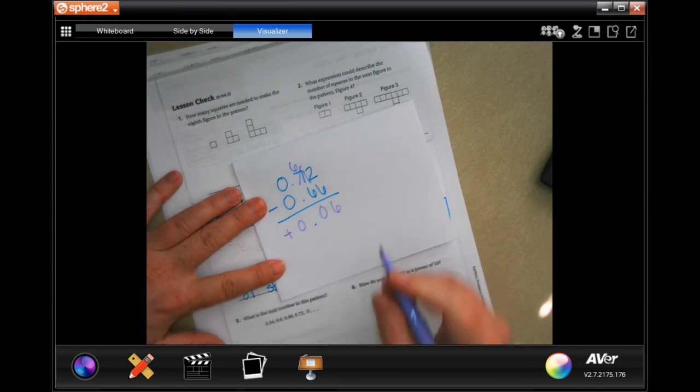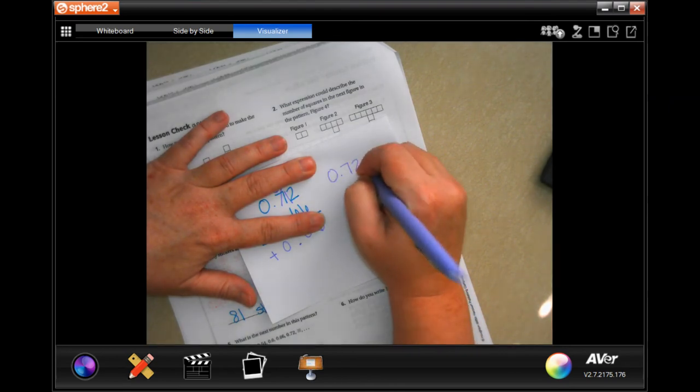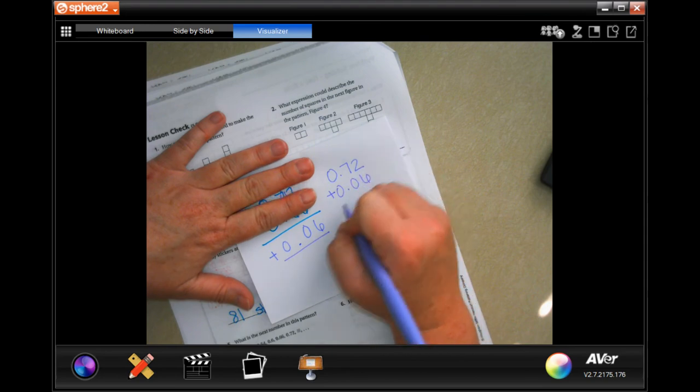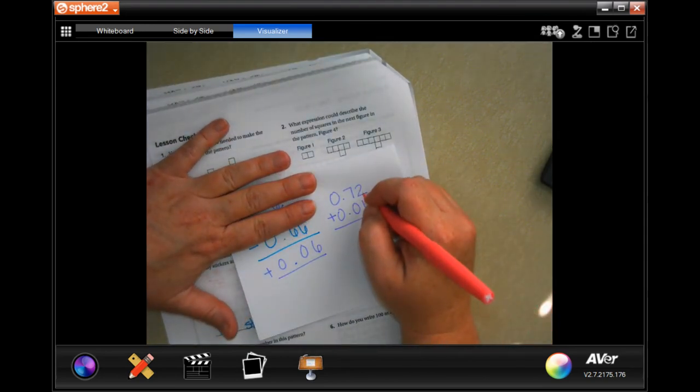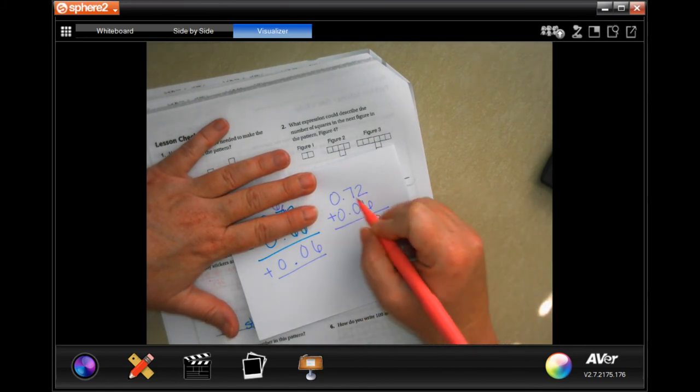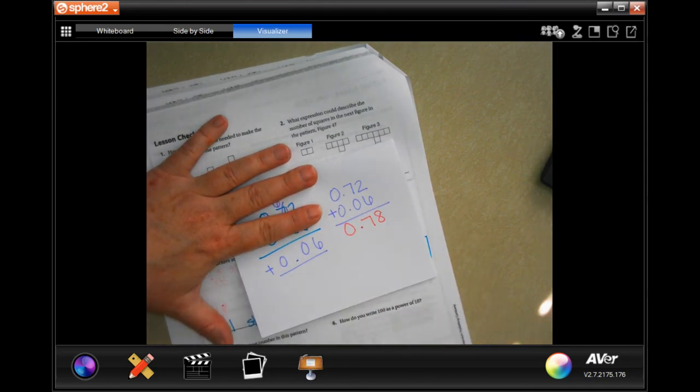I'm going to take that 0.72 now and add that 0.06. Drop my decimal. 2 plus 6 is 8, 7 plus 0 is 7, so 0.78.